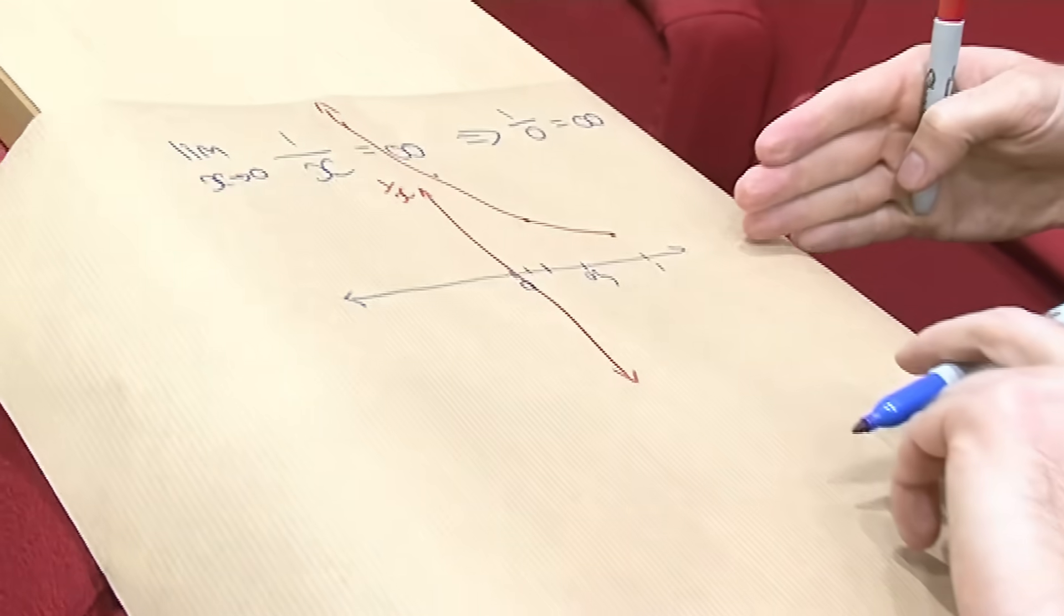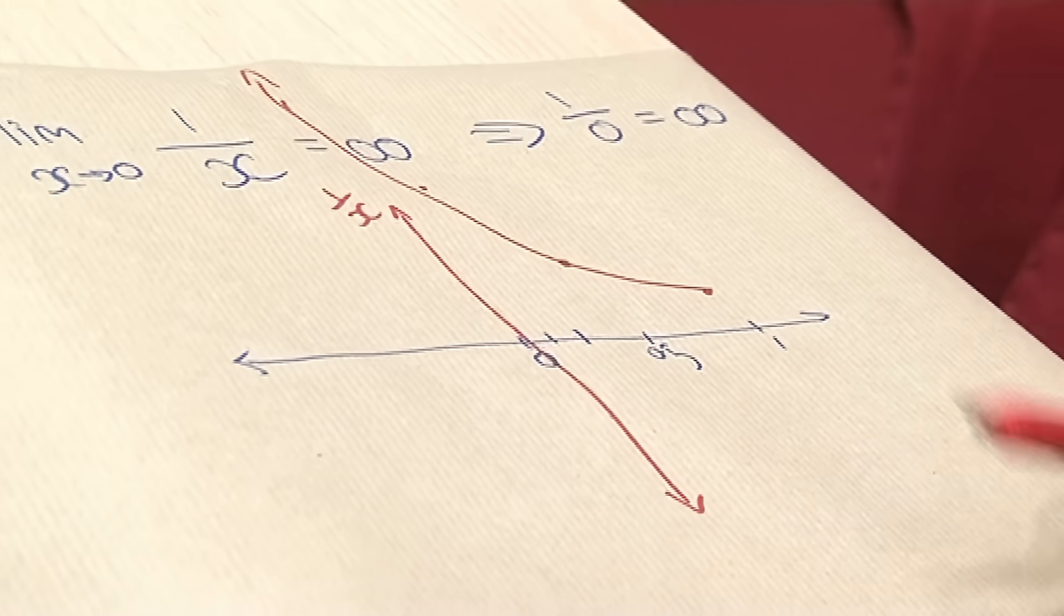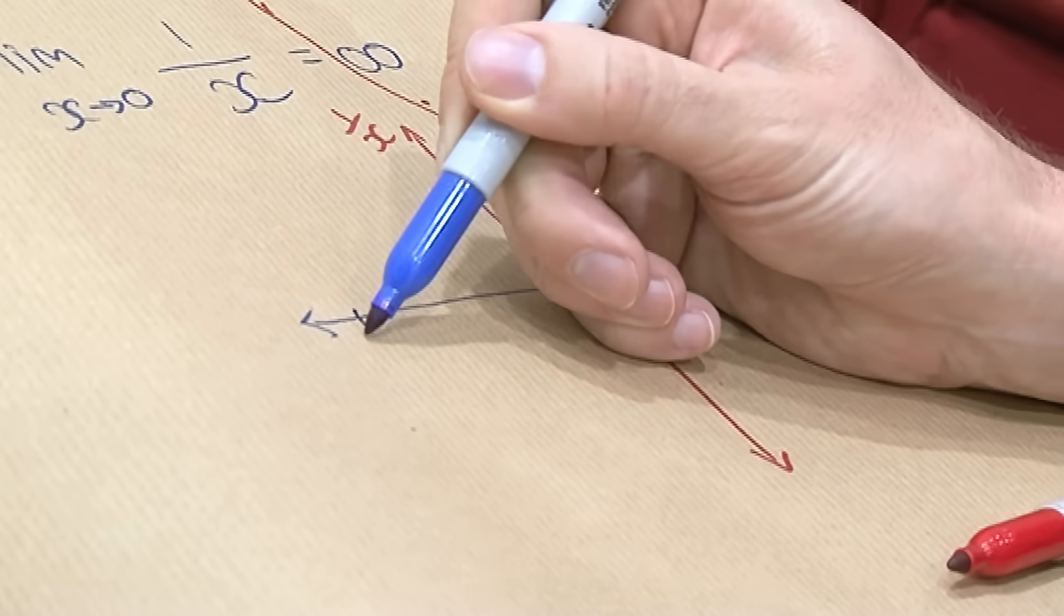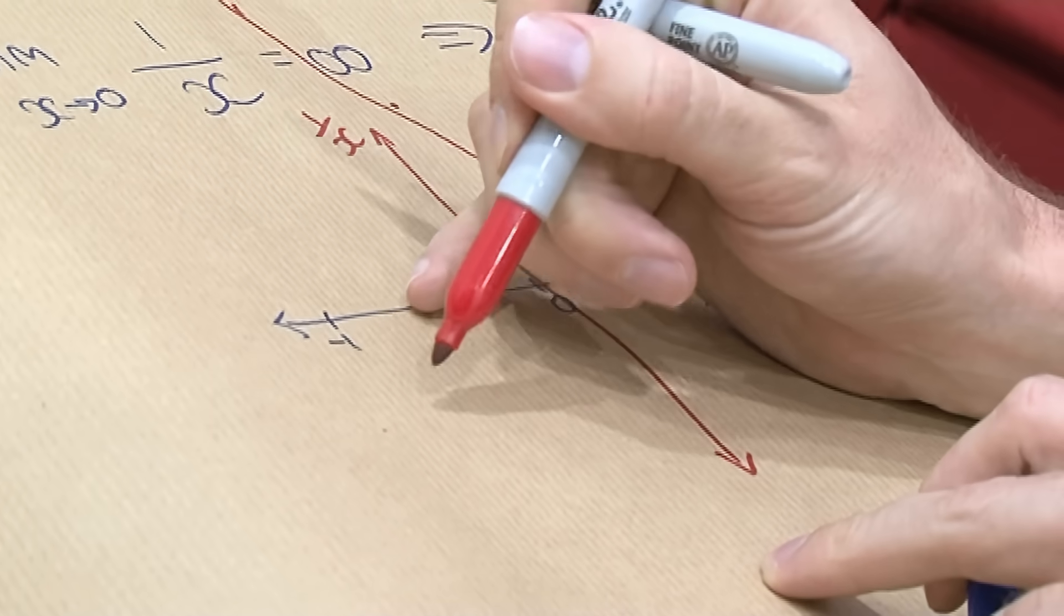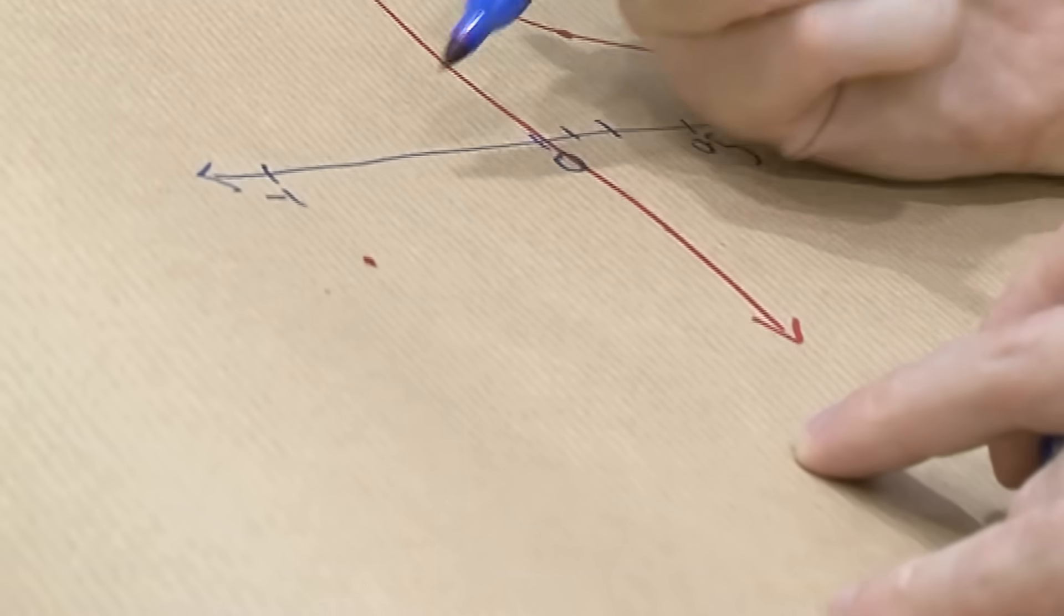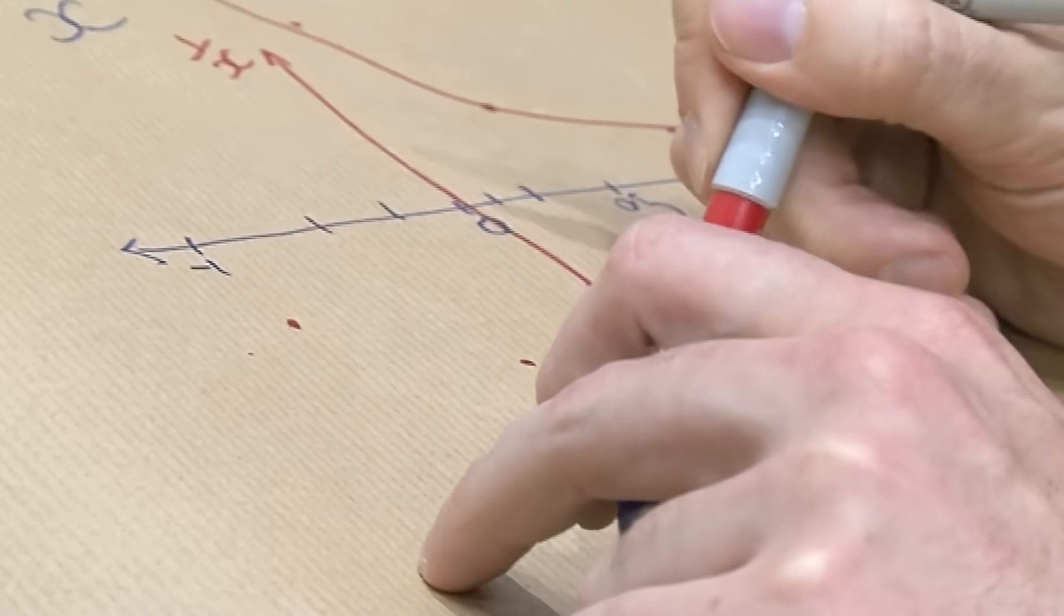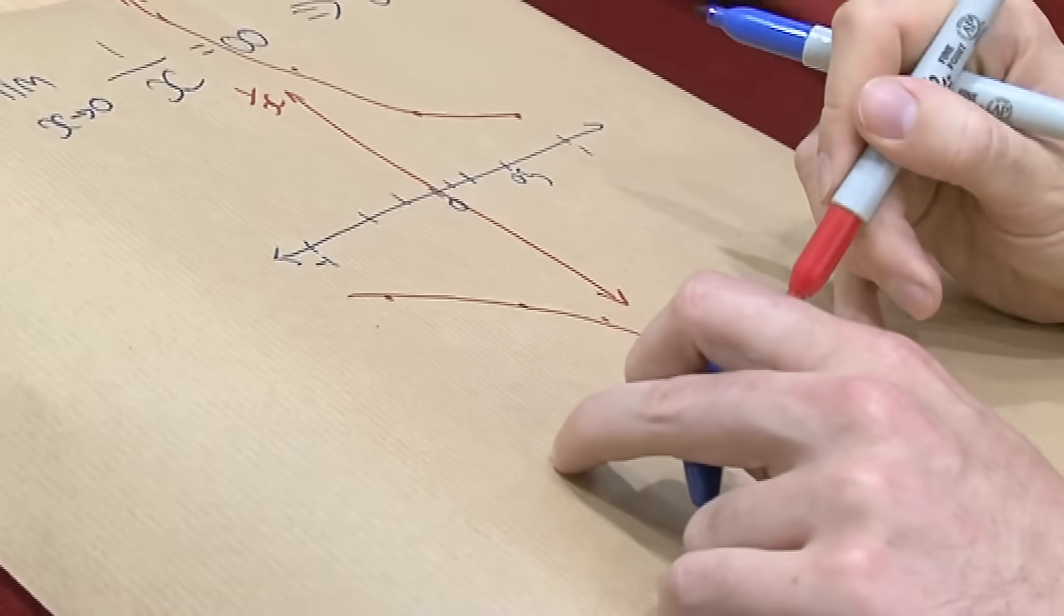But this only works if you're approaching zero from the positive numbers, if you're coming in from the right on your number line. If you come in from the left, it's completely different. So if you start over here at negative 1, then your value is actually down here at negative 1. If you then go to negative 1 half, it's down here at negative 2. And then you get closer and closer, the value goes racing off in this direction. In fact, it goes racing down to negative infinity.